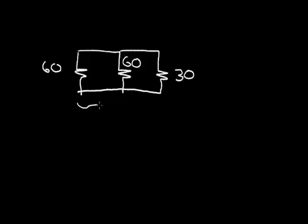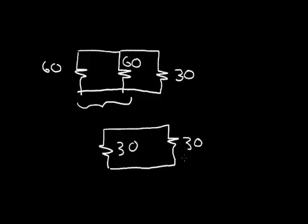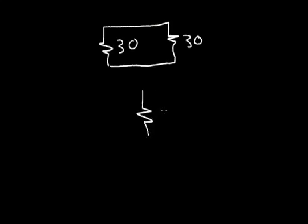Well, let's replace the two 60-ohm resistors with an equivalent parallel resistor. We know the parallel resistor is the product over the sum, but by inspection, when the parallel resistors are the same value, the equivalent always becomes half. So the two 60-ohm resistors in parallel become 30 ohms. Now we have 30 ohms in parallel with another 30 ohms, and again equal values in parallel cut in half, so the equivalent resistance is 15 ohms.